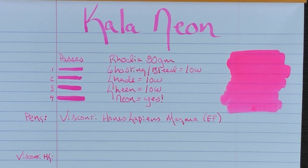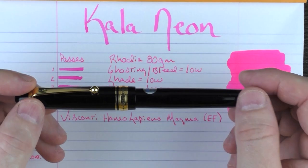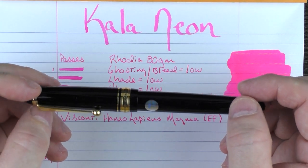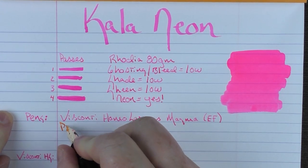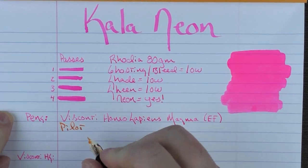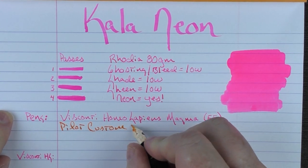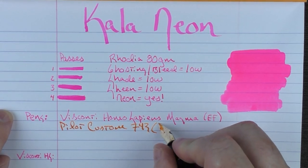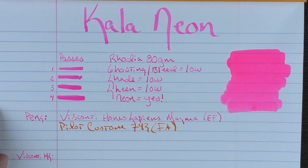Next up, we have a very interesting nib that is one of my favorites from Pilot and it is the FA nib. And this is on a Custom 743. So we have the Pilot Custom 743. And this is an FA nib. And you could tell that this is inked with the orange.